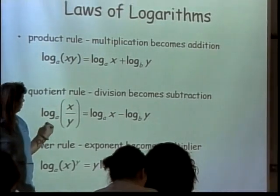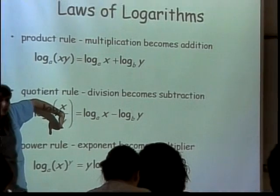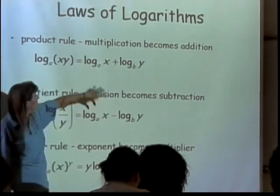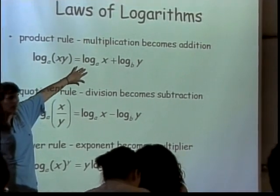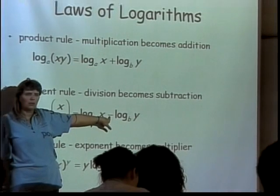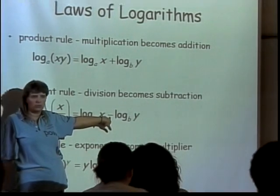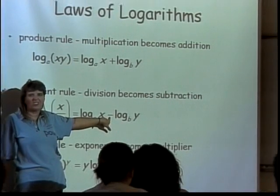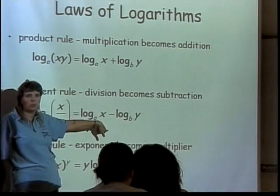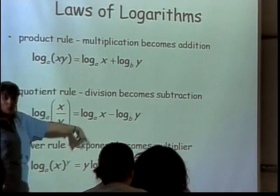Now, your quotient rule allows you to take your log base A of something where your argument has one thing divided by another thing and break it up so it looks very much like what we had before except this time we have a minus in here. And if you think about exponents, what do you do with exponents when you divide? Subtract them. What do you do with the exponents when you multiply two things that have an exponent? You add them. That's where these came from.